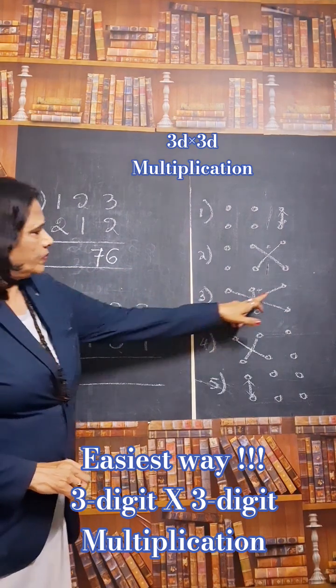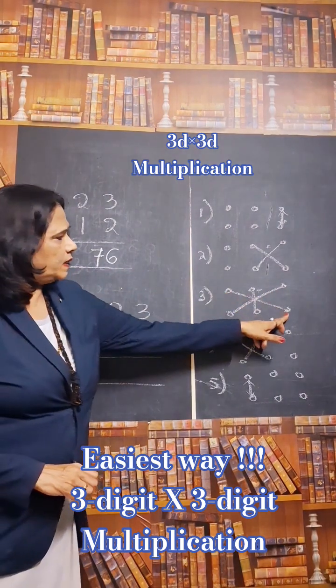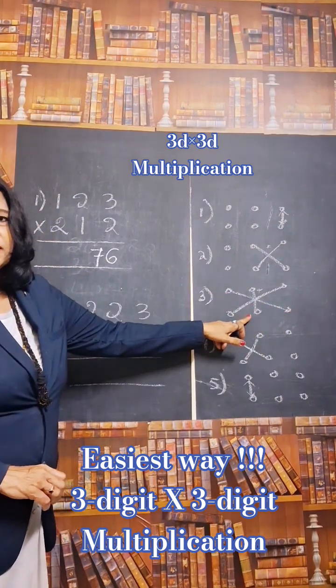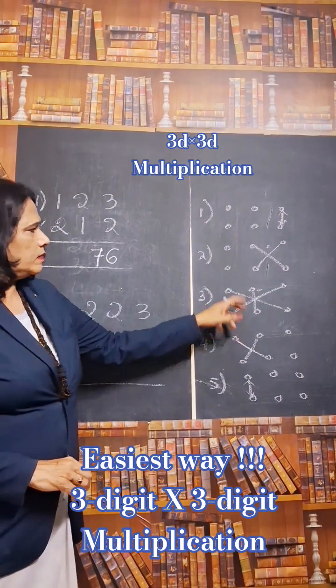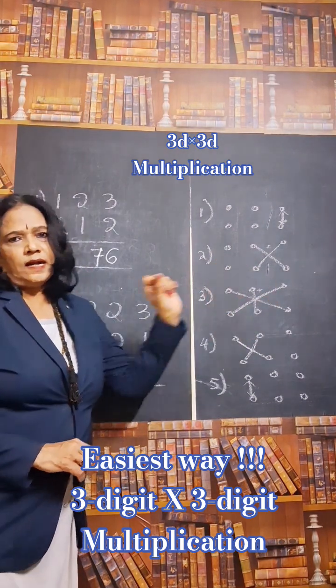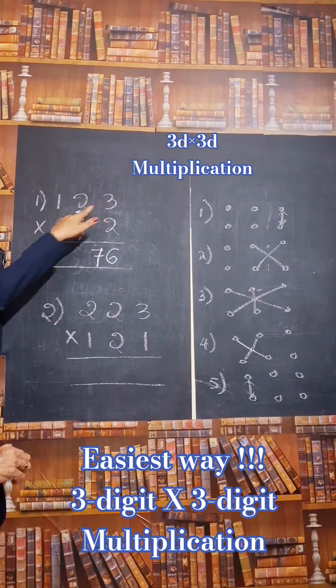See the third step. Units place into tens place, units place into tens place and multiply tens and tens. Then add all the numbers. Do the cross multiplication and then addition. Third step is cross multiplication. Like this.